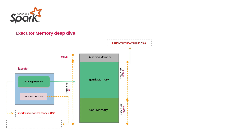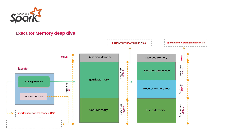Now I want to explain one more topic. Moving to stage three: without touching Reserved Memory at the top or User Memory at the bottom, let's go deeper into Spark Memory. Spark Memory further divides into two parts: Storage Memory Pool and Executor Memory Pool.